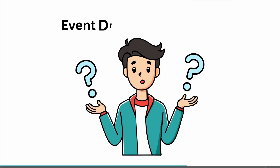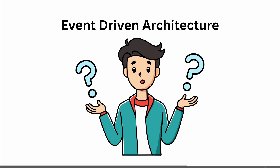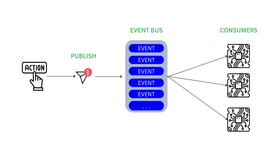So, what exactly is event-driven architecture? In a nutshell, it's an architectural pattern where components communicate with each other through asynchronous events. Instead of directly calling each other, components publish events to a central event bus, and other components subscribe to those events and react accordingly. This decoupling allows for greater flexibility, scalability, and resilience.